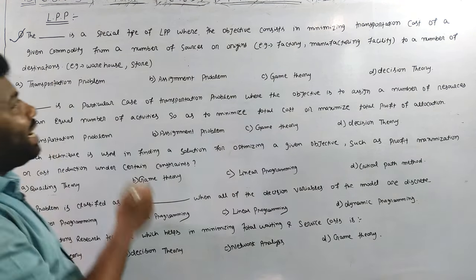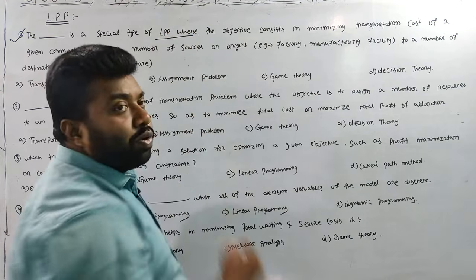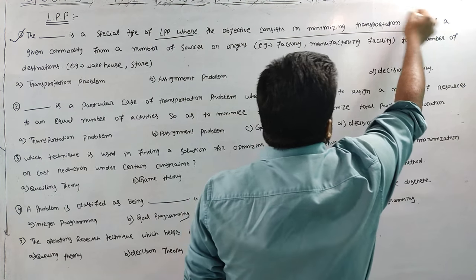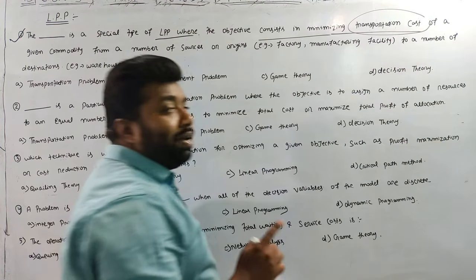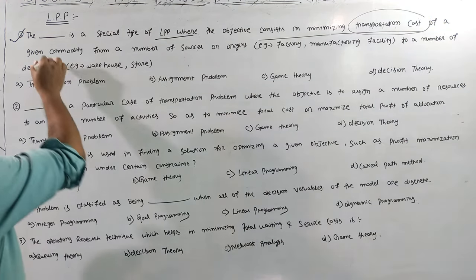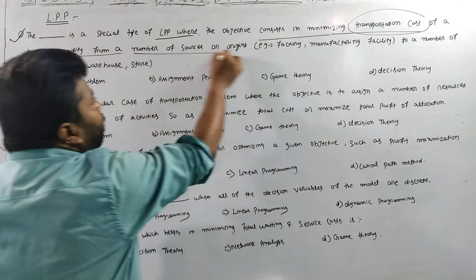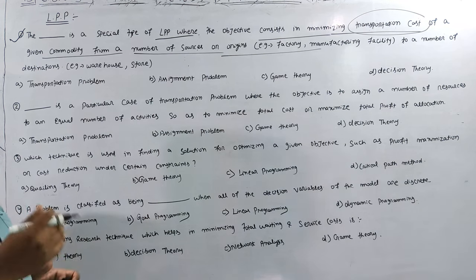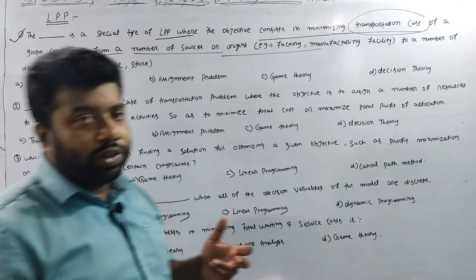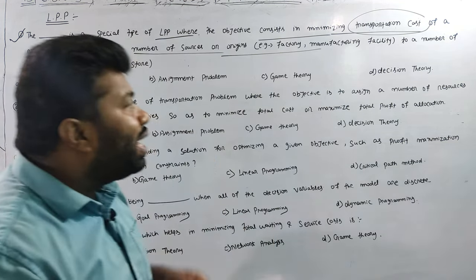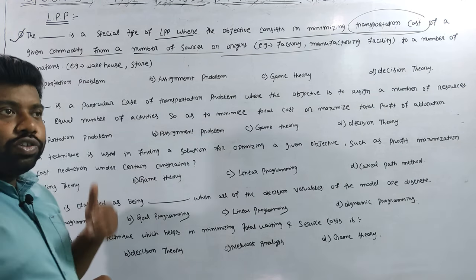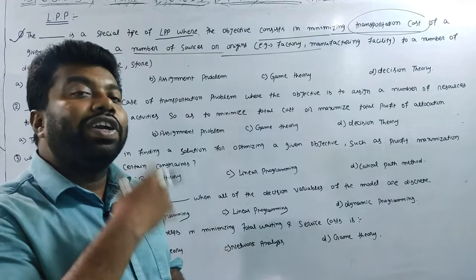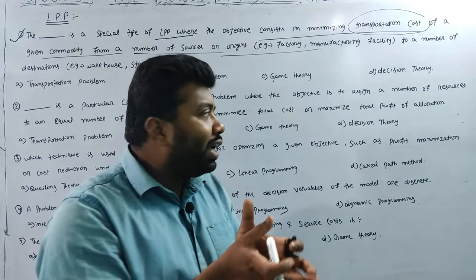This is a special type of LPP, a special type of linear programming problem where the objective constraint is to minimize the transportation cost of the given commodity from number of source to origin. So, we have different types of problems: transportation problems, assignment problems, and different types of people.